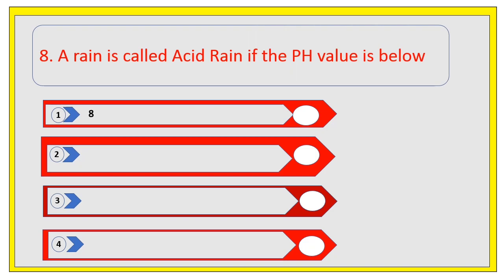Rain is called acid rain if the pH value is below. What is the full form of pH value? Power of hydrogen. Options are 8%, 7.5%, 5.6%, and 6.5%.